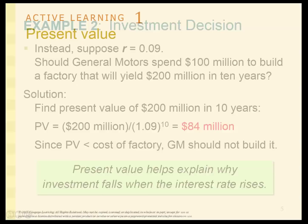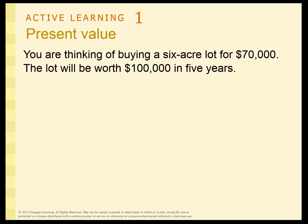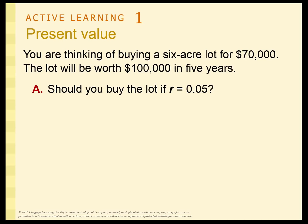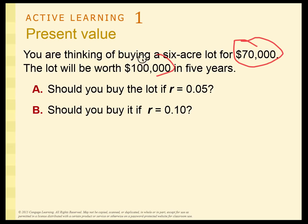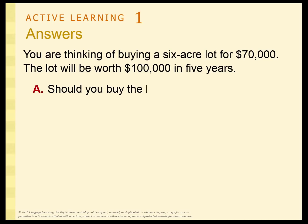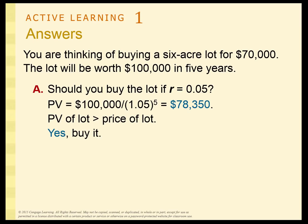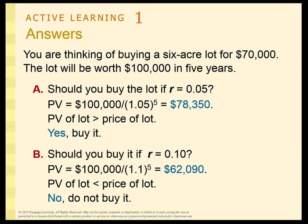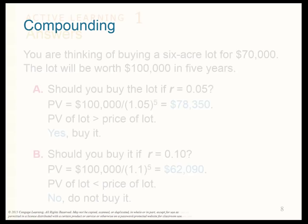Here's a practice problem. You're going to buy a six-acre lot for $70,000 and can sell it for $100,000 in five years. Is it worth it? Pull the $100,000 back to present value using R = 5% or R = 10%, then compare it to the $70,000 present cost. At 5%, the $100,000 feels like $78,350 today — more than $70,000, so you should buy it. At 10%, it only feels like $62,000 today — less than $70,000, so you should not buy it.